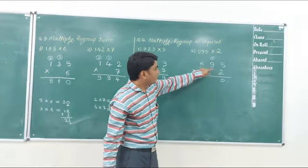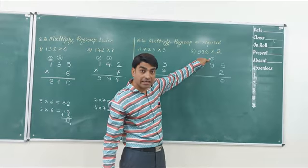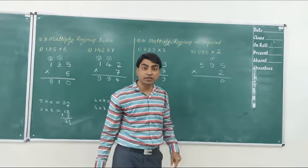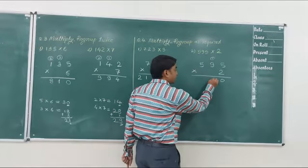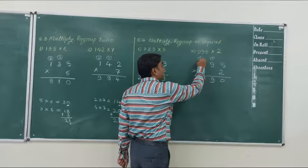Now, 2 nines are 18, plus 1, 19. Again, 19 is a 2-digit number. So from the 19, 9 will be written here and 1 will be carried to the next place.